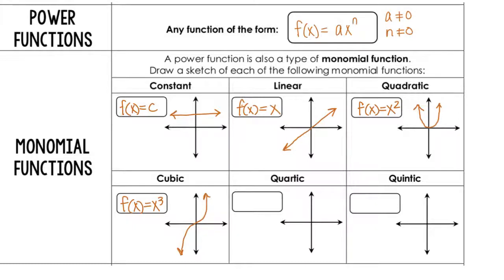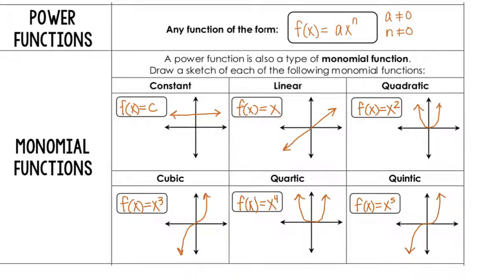The quartic and quintic functions mimic the quadratic and cubic respectively. The quartic, f(x) = x to the fourth, mimics the quadratic but flattens out on the x-axis a bit longer than x squared. The quintic, f(x) = x to the fifth, looks cubic but also lays on the x-axis a little longer before moving on.